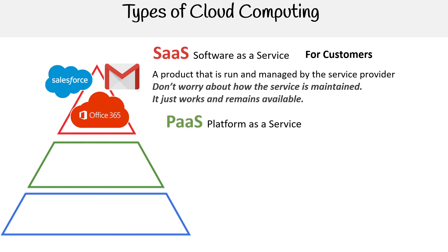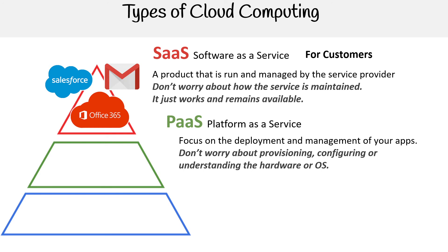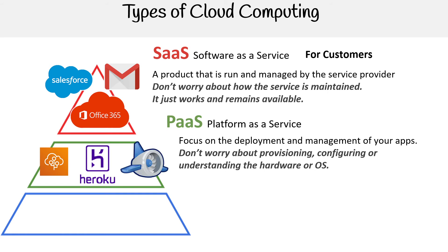The next layer is Platform as a Service, also known as PaaS. This focuses on the deployment and management of your apps. You don't worry about provisioning, configuring, or understanding the hardware or OS — you can just upload your code and it will do the rest. Examples include Elastic Beanstalk on AWS, Heroku, or Google App Engine. If you have a web application and just want to deploy and focus on your code, that's what a PaaS is. This is specifically for developers.